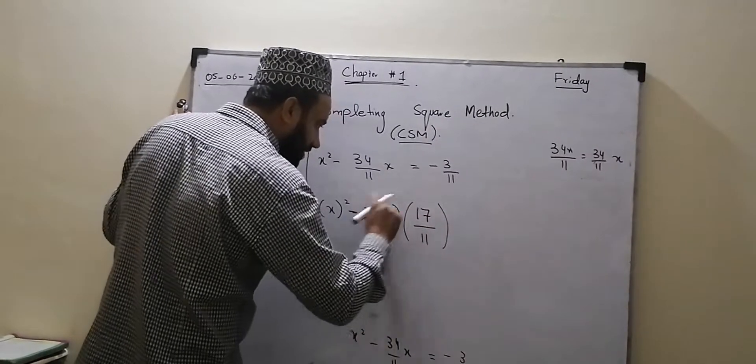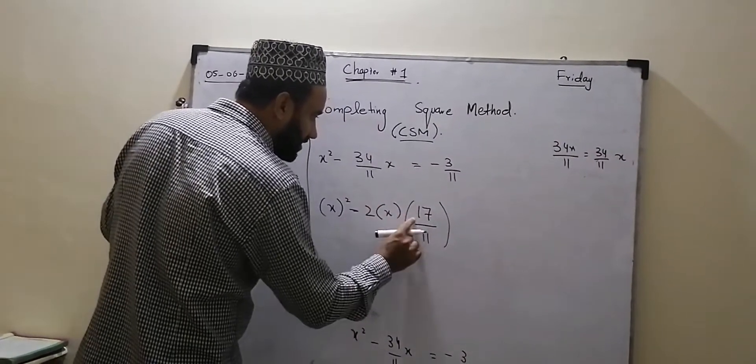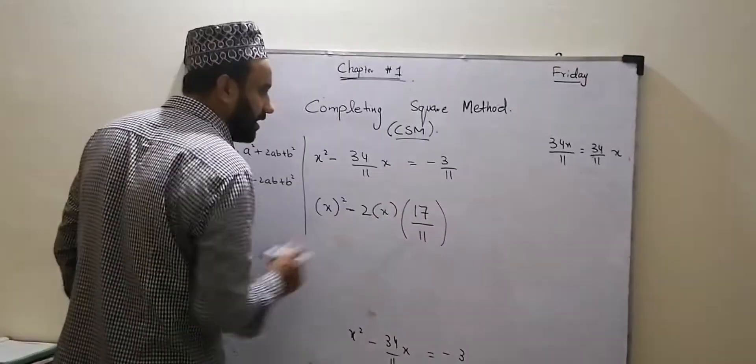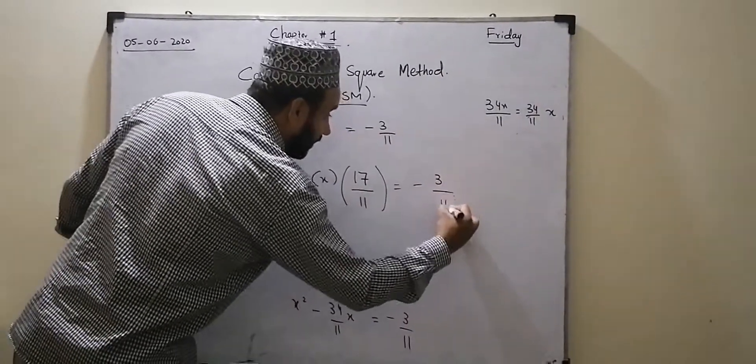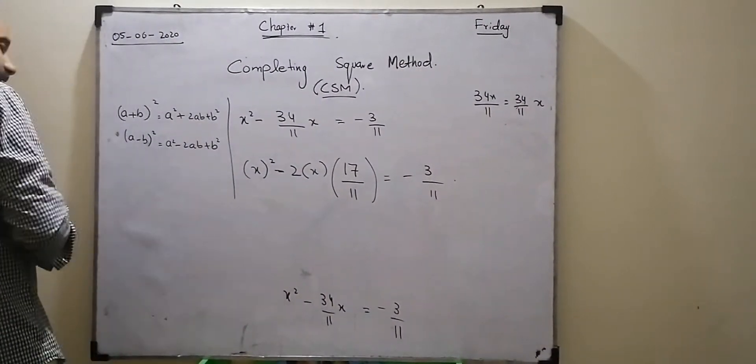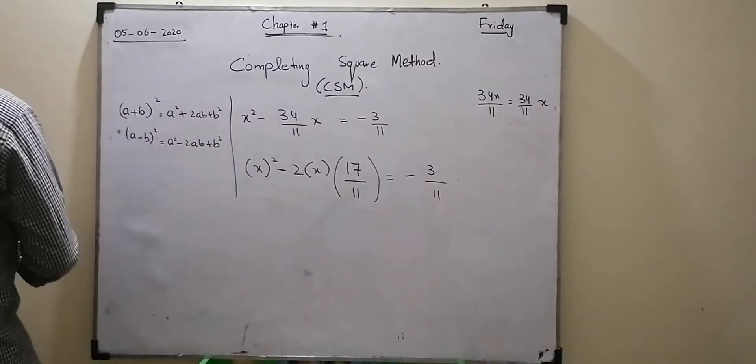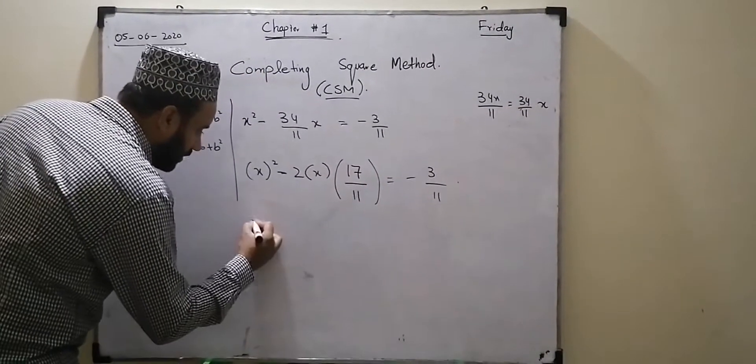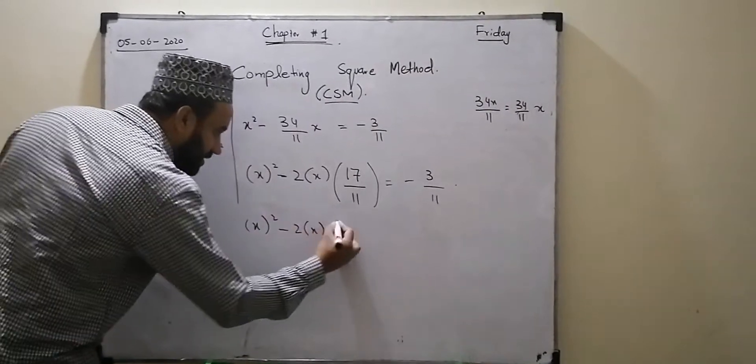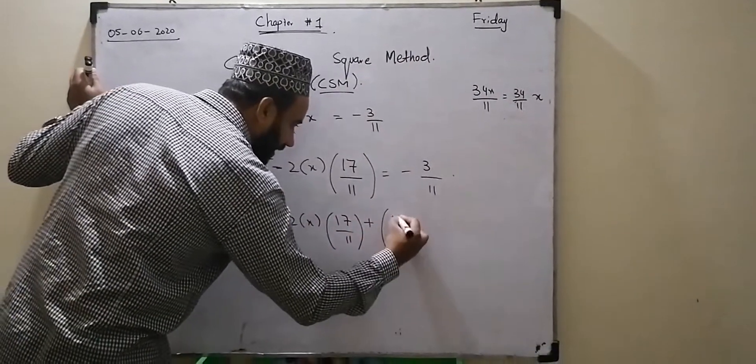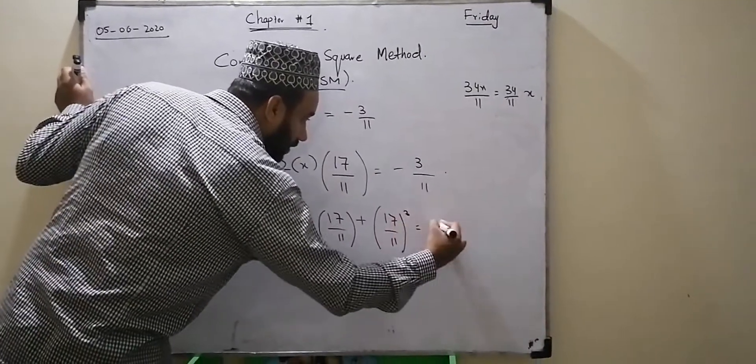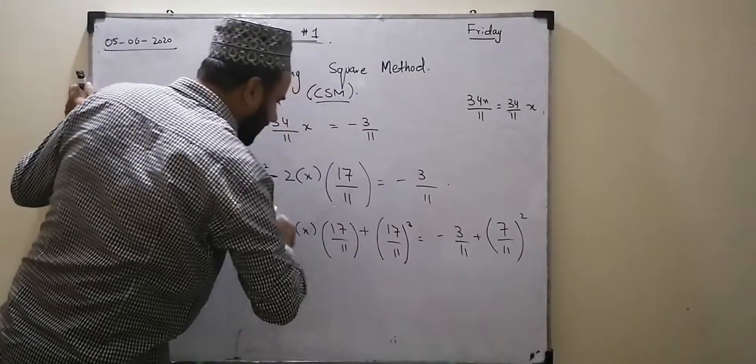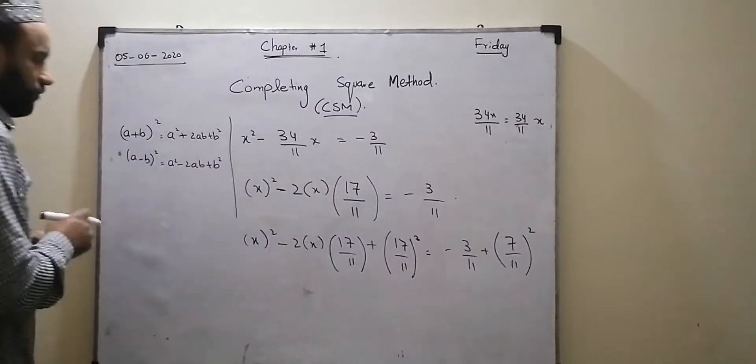This is 17 times 2 equals 34. So two into seventeen is thirty-four, x divided by eleven. This one and this one is no difference, except this one's arrangement. Because this particular method is the completing square method. We have x² minus 2 times x times 17 by 11. Plus 17 by 11 whole square we add. Adding 17 by 11 square on both sides.